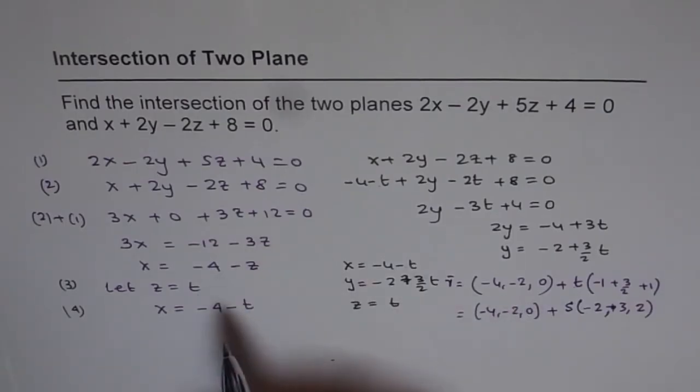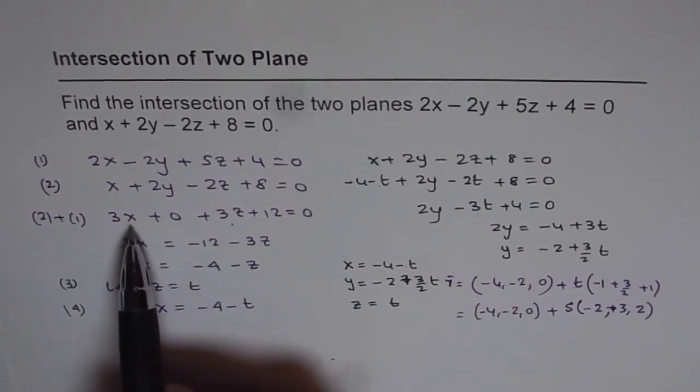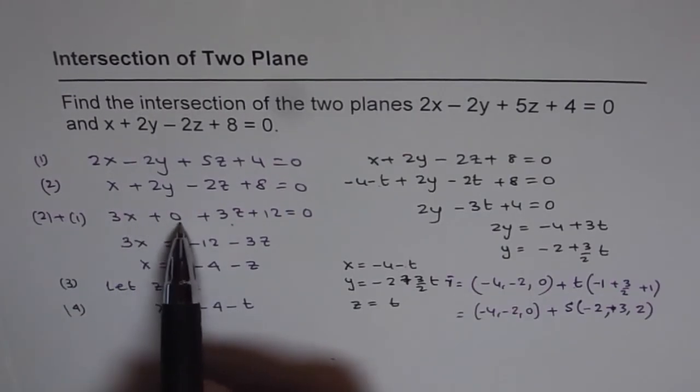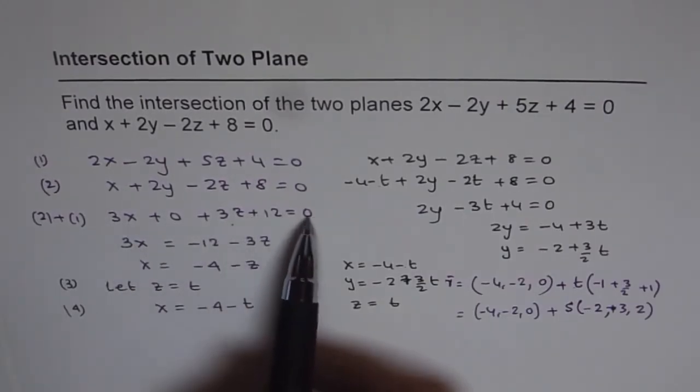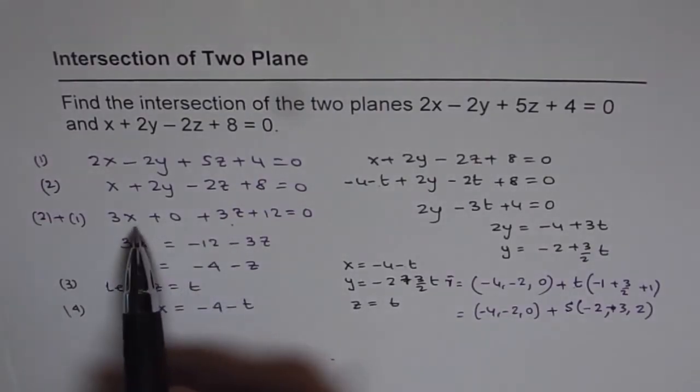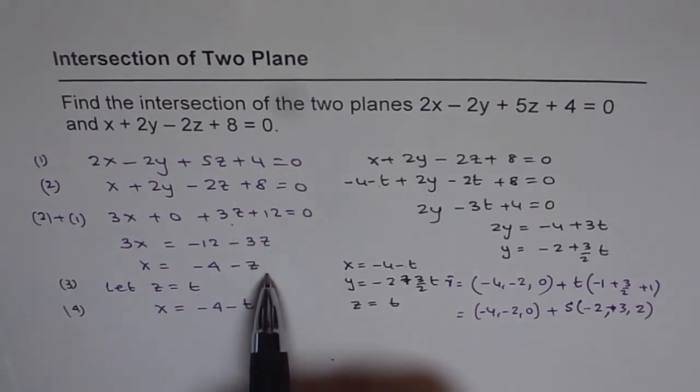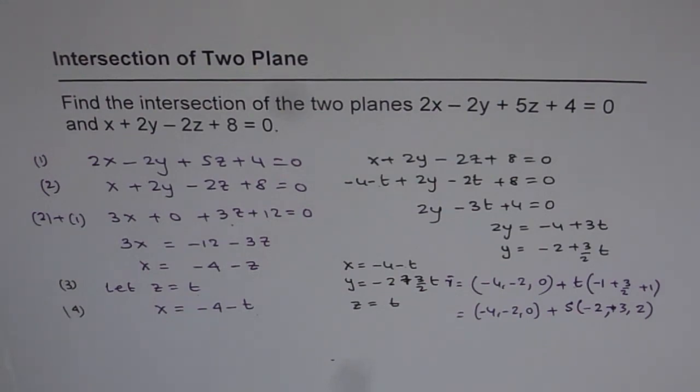If you're using the matrix method, at this stage you'll get 3, 0, and 3 on one side, and 12 on the other. When you use this method, you need to introduce a parameter to solve, as we did here, and then get the answer.